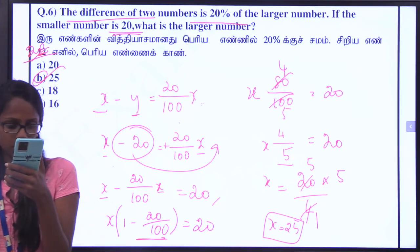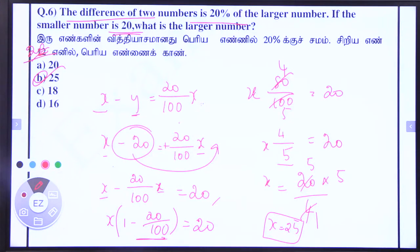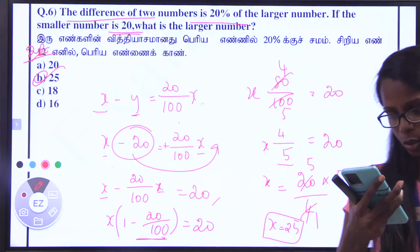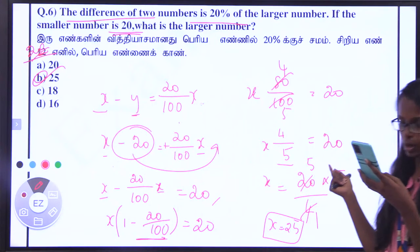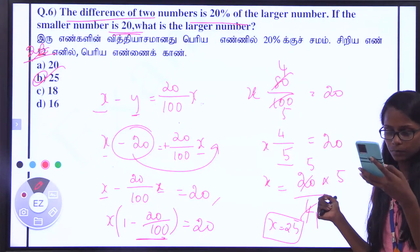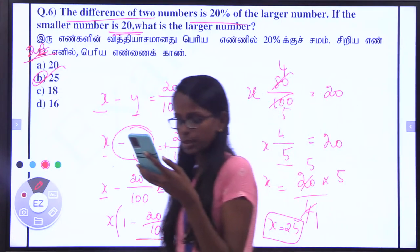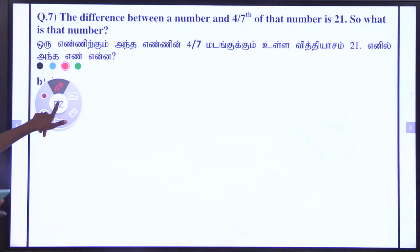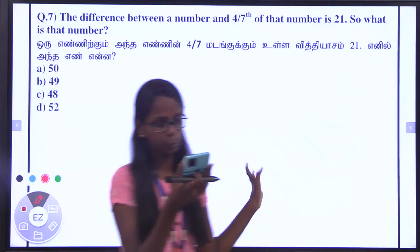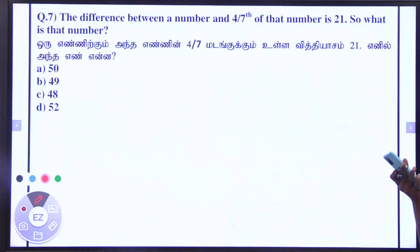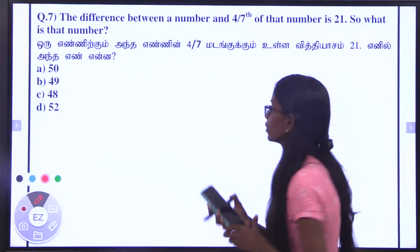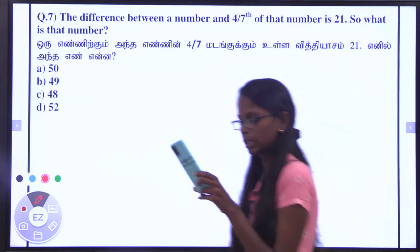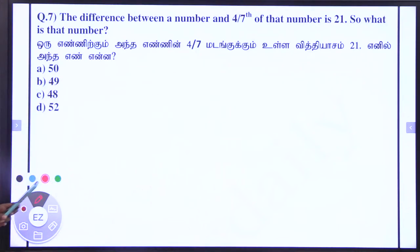Six questions are complete. Seventh question coming up. The difference between two numbers — two numbers are different in value.